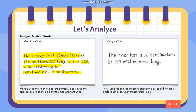Now for Carrie's work: Carrie used the ruler to measure correctly, but she did not state the relationship between the measurement units. Carrie said the marker is 12 centimeters or 120 millimeters long only — without identifying the relationship. Unlike Marcia's work, where she identified that 1 centimeter is equivalent to 10 millimeters.